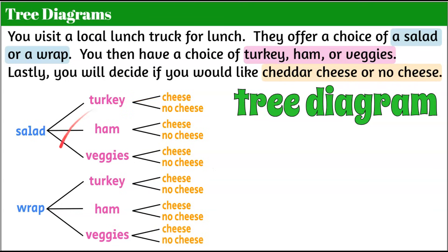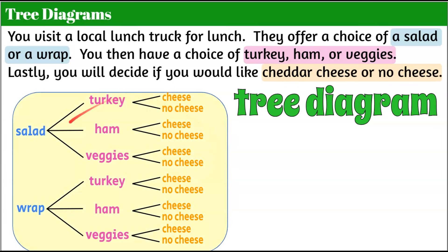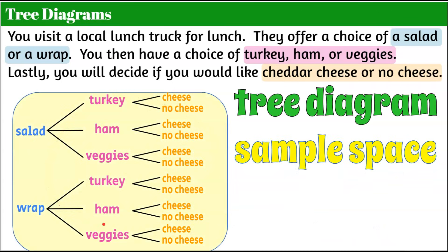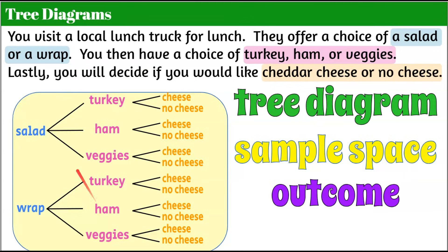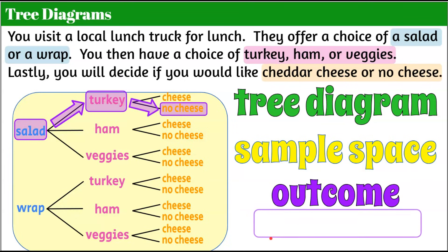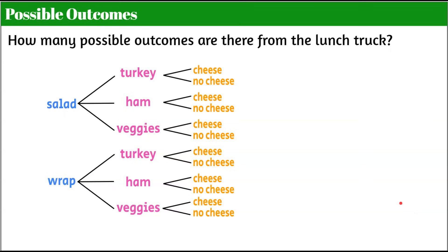So this is a tree diagram, which also represents the sample space. Now we want to talk about the outcomes. Each one of these — as we follow the branches in the tree diagram — tells us an outcome. Let's review one outcome. One specific outcome is: I choose salad with turkey and no cheese. Let's talk about the possible outcomes in this sample space.